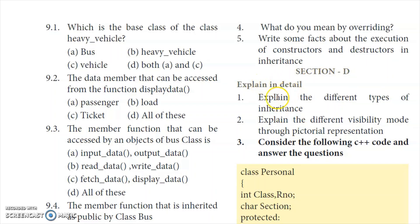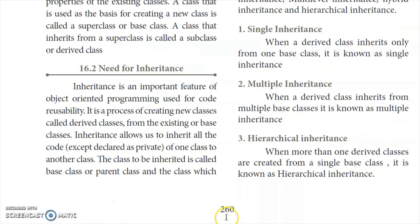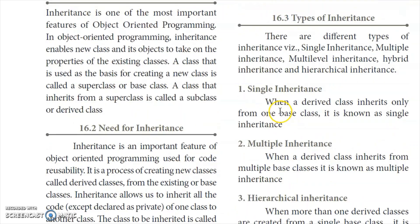First question: explain the different types of inheritance. On page number 260, the types of inheritance are listed. The first types of inheritance are: single inheritance, multiple inheritance, multilevel inheritance, hybrid inheritance, and hierarchical inheritance.